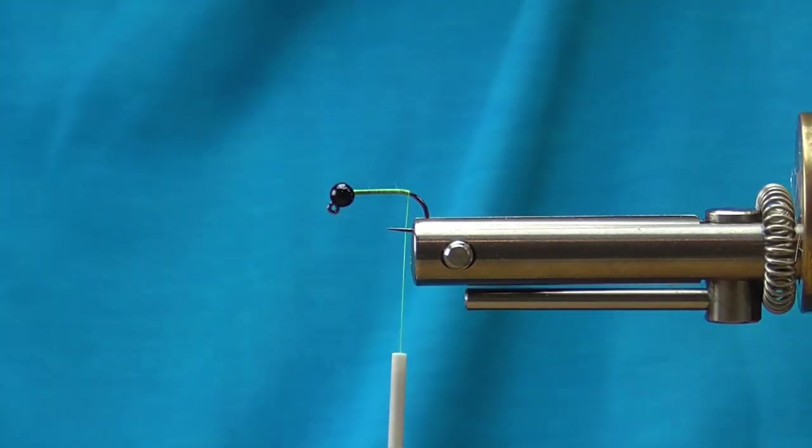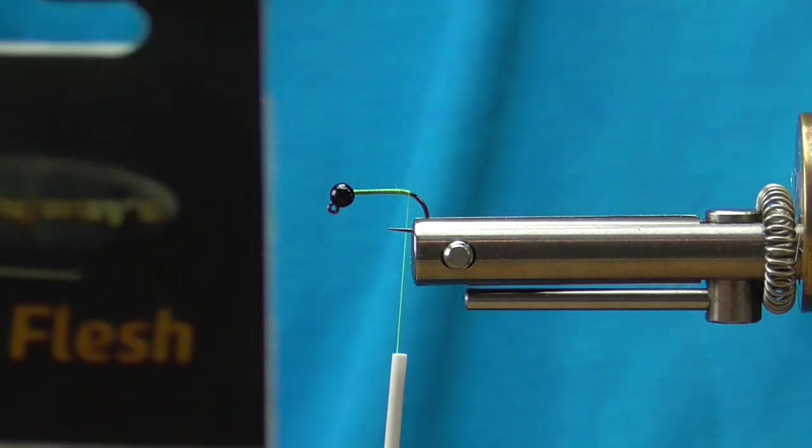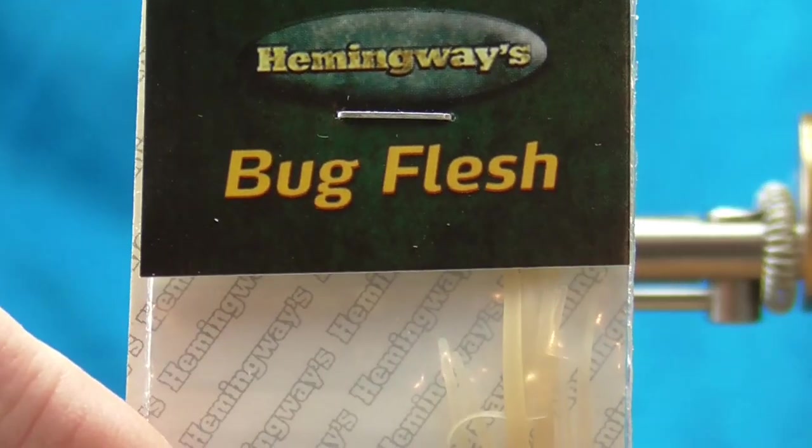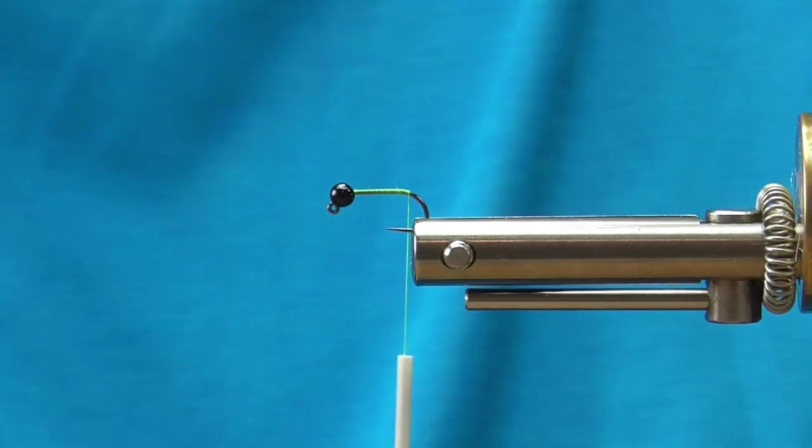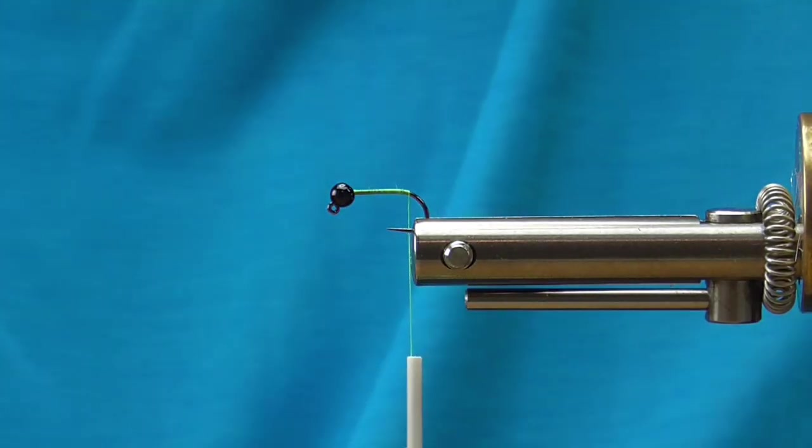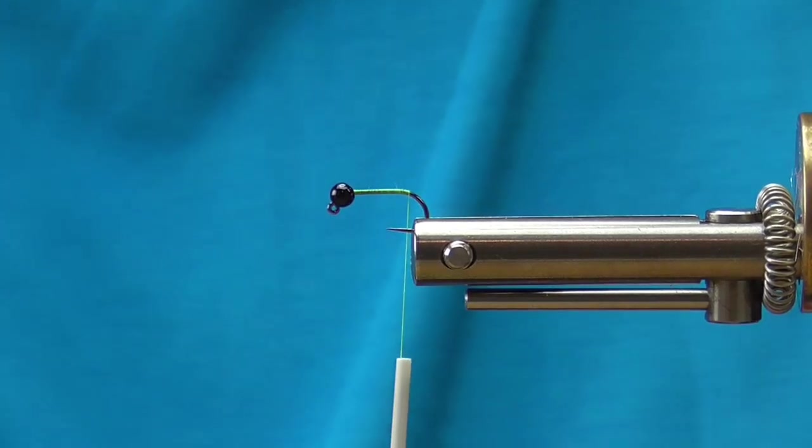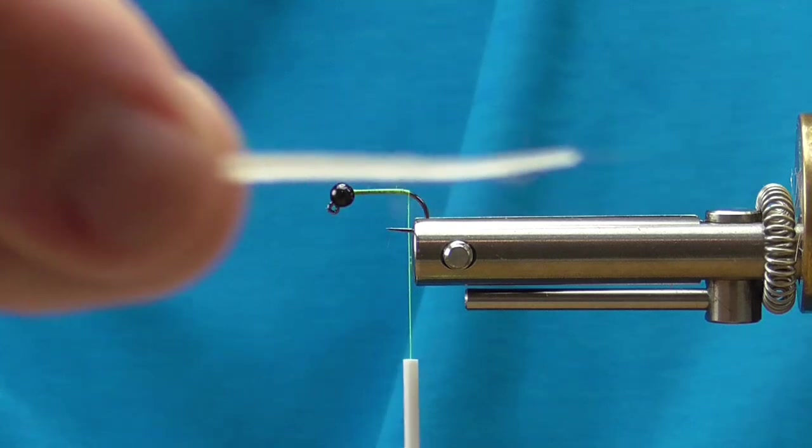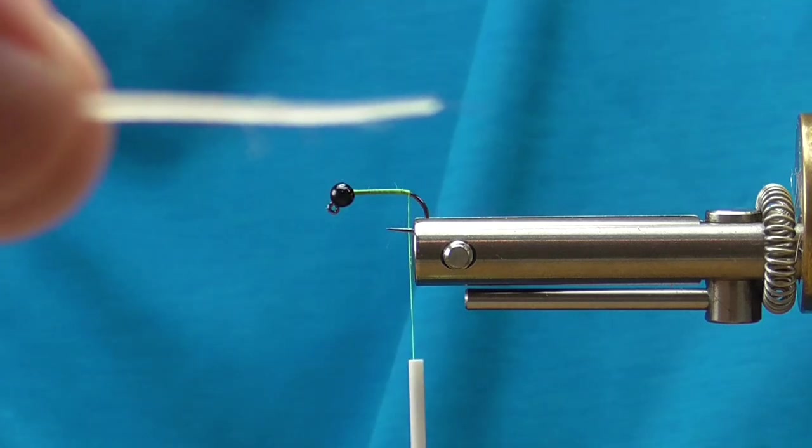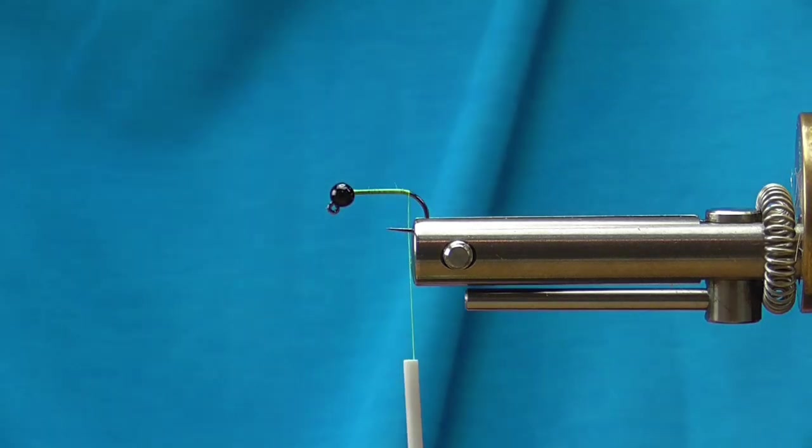The next thing I'm going to tie in is some Hemingway's bug flesh. If you haven't used this, this stuff is neat because it will create a tapered body on its own. The individual strands actually taper from small to large. This is a tan color.